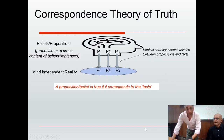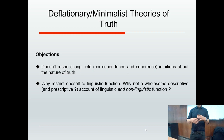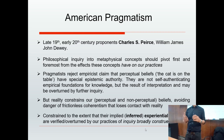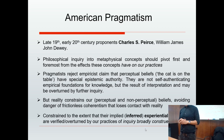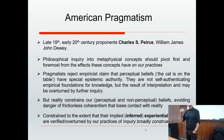Let's think about the non-linguistic functions of truth. This requires that we revisit some of the ideas of the American pragmatists — a school of thought that developed in the late 19th and early 20th century. The main proponents were Charles S. Peirce, William James, and John Dewey. Their basic insight was that philosophical inquiry into metaphysical concepts should pivot first and foremost from the effects these concepts have on our practices — not just linguistic but non-linguistic practices.